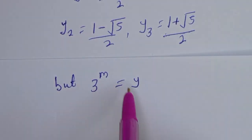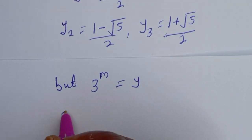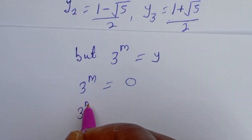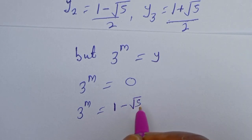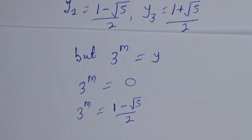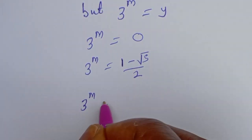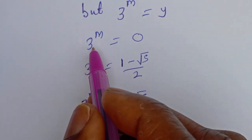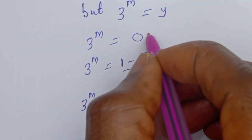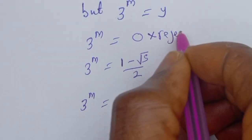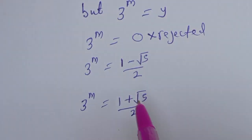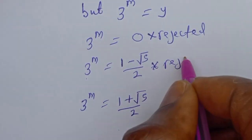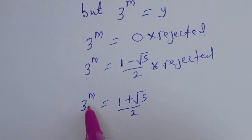Since 3 to the power of M equals Y, we check each case. 3 to the power of M cannot equal zero, so we reject Y equals zero. 3 to the power of M equals 1 minus root 5 over 2 — this value is negative, so it is also rejected. Since 3 to the power of M must be positive, this case is rejected.